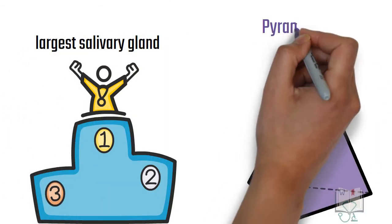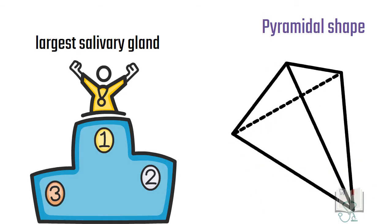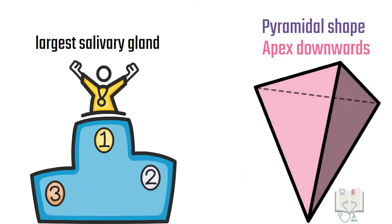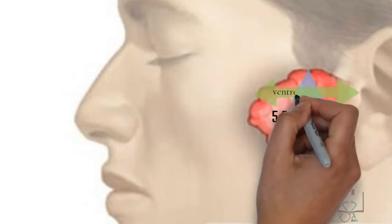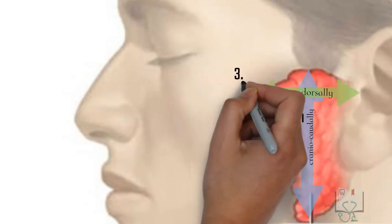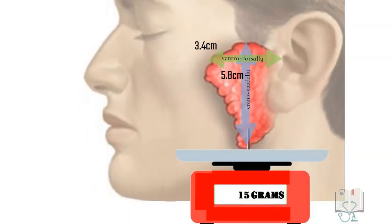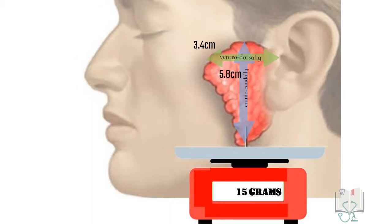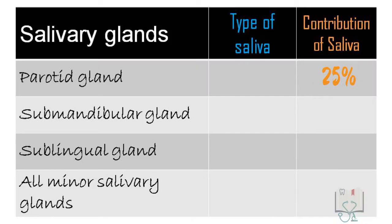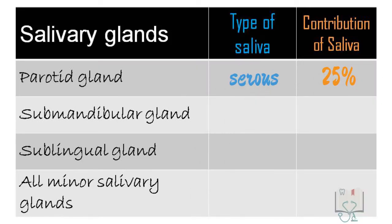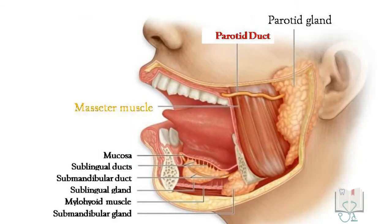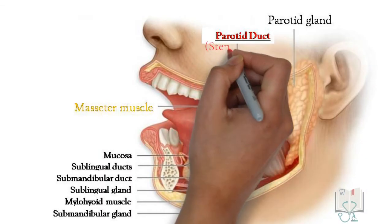The parotid gland has the shape of a three-sided pyramid, with the apex pointing downward. Craniocaudally it measures 5.8 centimeters and ventrodorsally 3.4 centimeters. It weighs around 15 grams. Despite being the largest gland, it contributes only 25% of the total saliva, which is serous in nature.